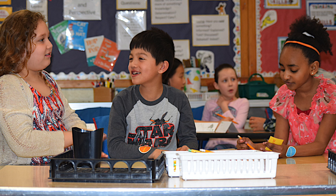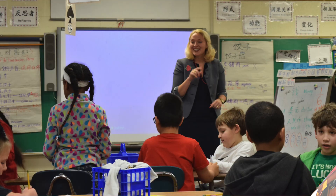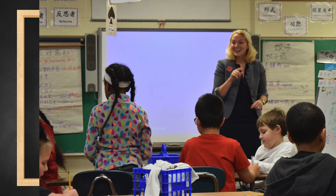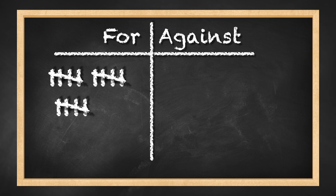You'll lead an activity where students get to decide whether or not to lend money to a business owner. Ask students to stand and then read the first scenario aloud. If they think it's a good idea to lend the business owner money, they're to move to the right side of the room. If they don't think it's a good idea, they're to move to the left side of the room.